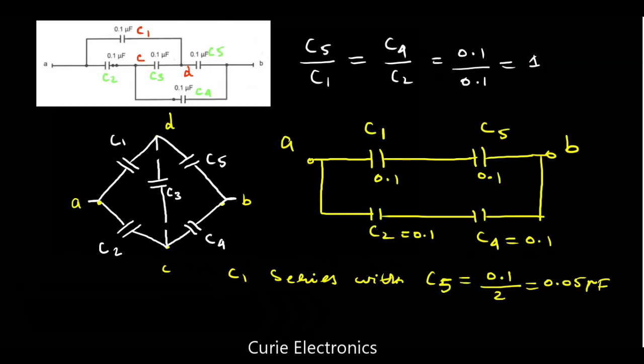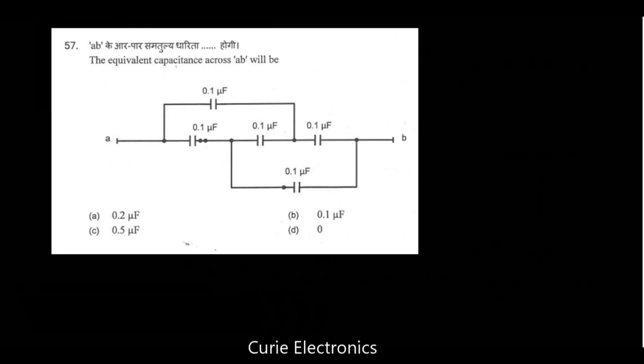And once you know the Wheatstone Bridge concept, it is very easy. You have to check the arms ratio. If the ratio comes equal, then similar to the galvanometer connection we make in Wheatstone Bridge, C3 we can make it open. Then it becomes very simple to simplify. So the answer for this question is 0.1 microfarad.